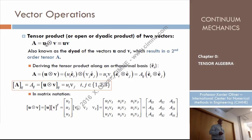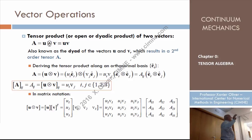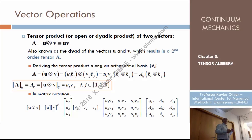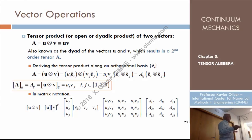We'll denote that by a cross surrounded by a circle. Following the spirit of engineers of doing things as simply as possible, we'll sometimes neglect that symbol. If we don't put anything between two vectors, that will stand for tensor product. If we place a dot, that will be the dot product. If we place a cross, that will be the cross product or vector product. If we place a cross surrounded by a circle, or nothing, that stands for the tensor product.